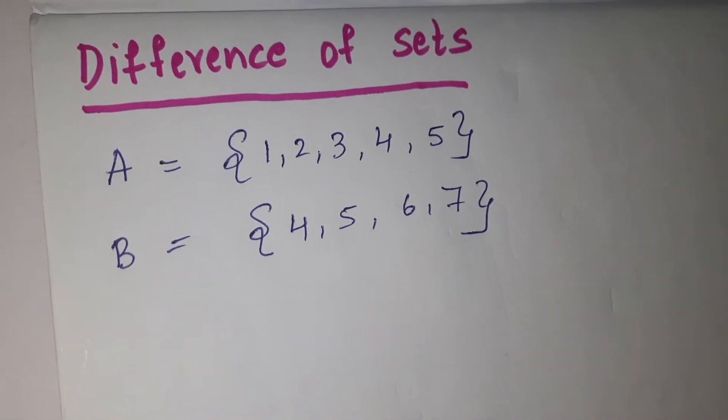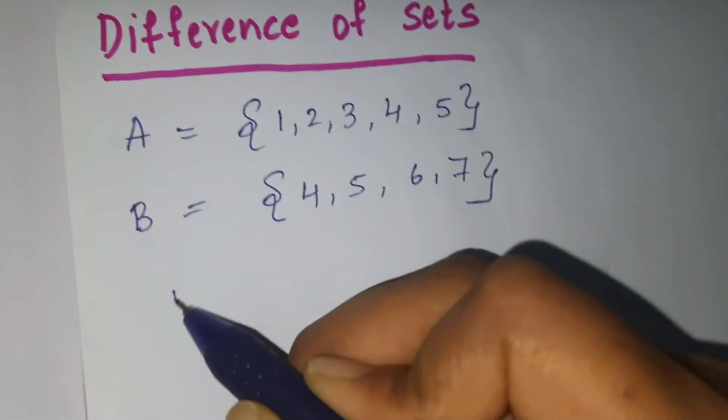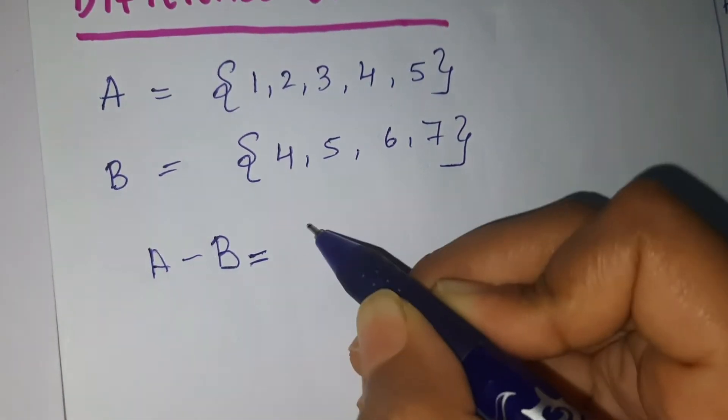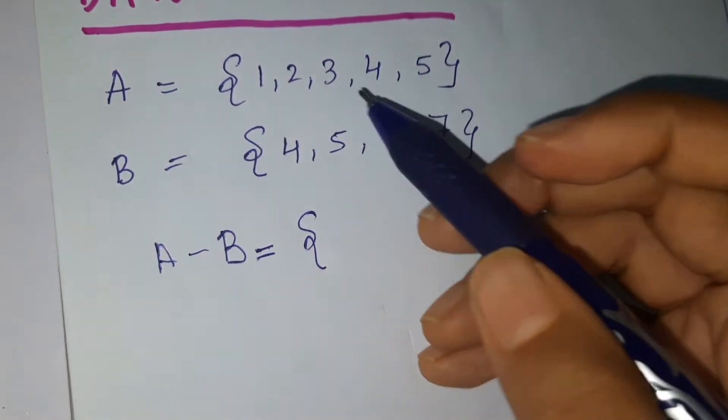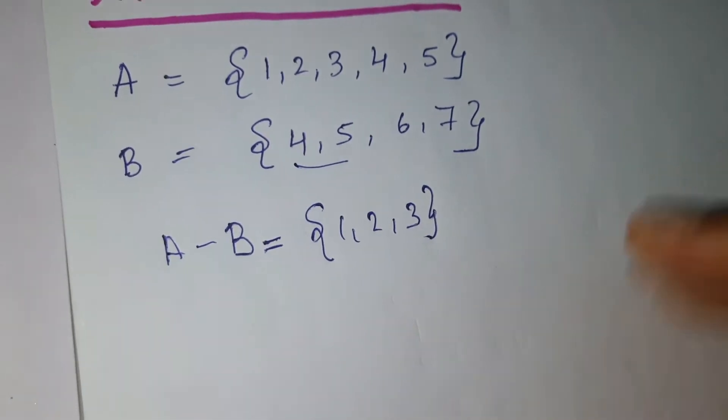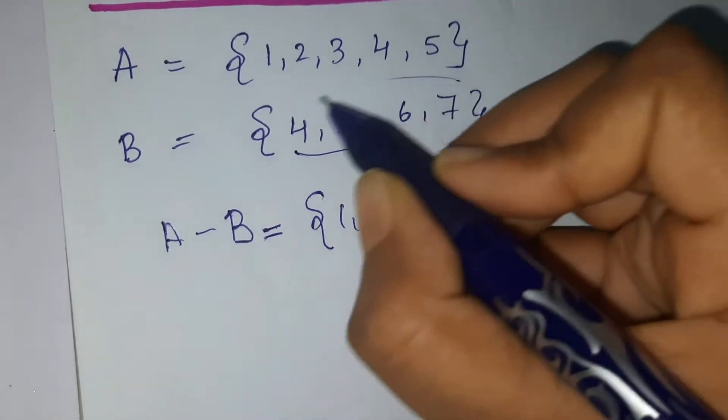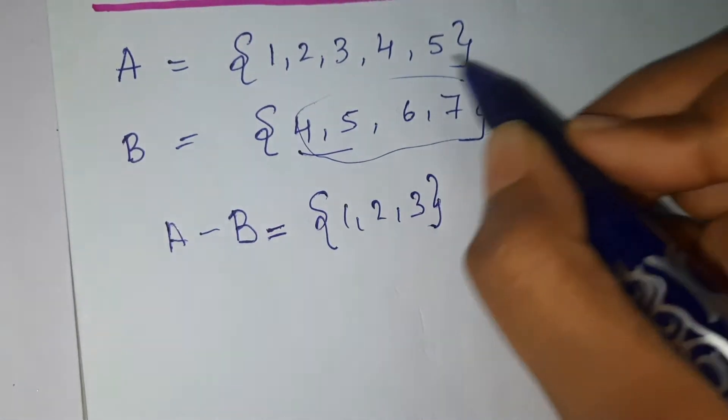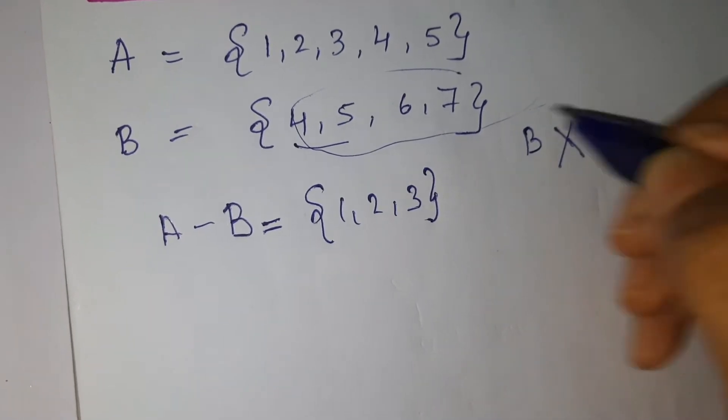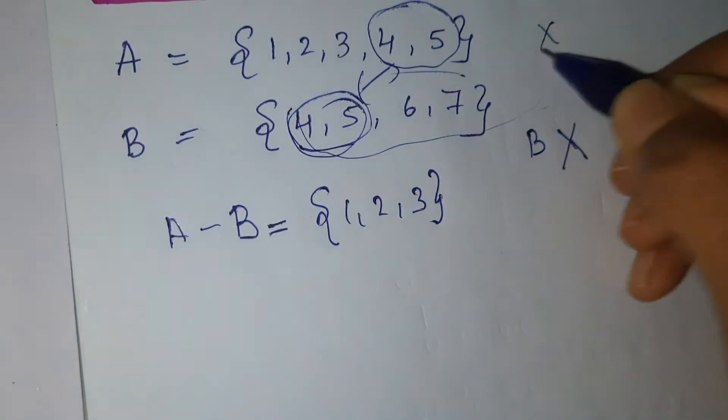So here A minus B. First you remove this is one, two, three. How, you ask? See, in A minus B what you have to do is you have to remove the B element completely and also the common elements. The common elements between A and B, that also should be removed. That's how we'll get A minus B.